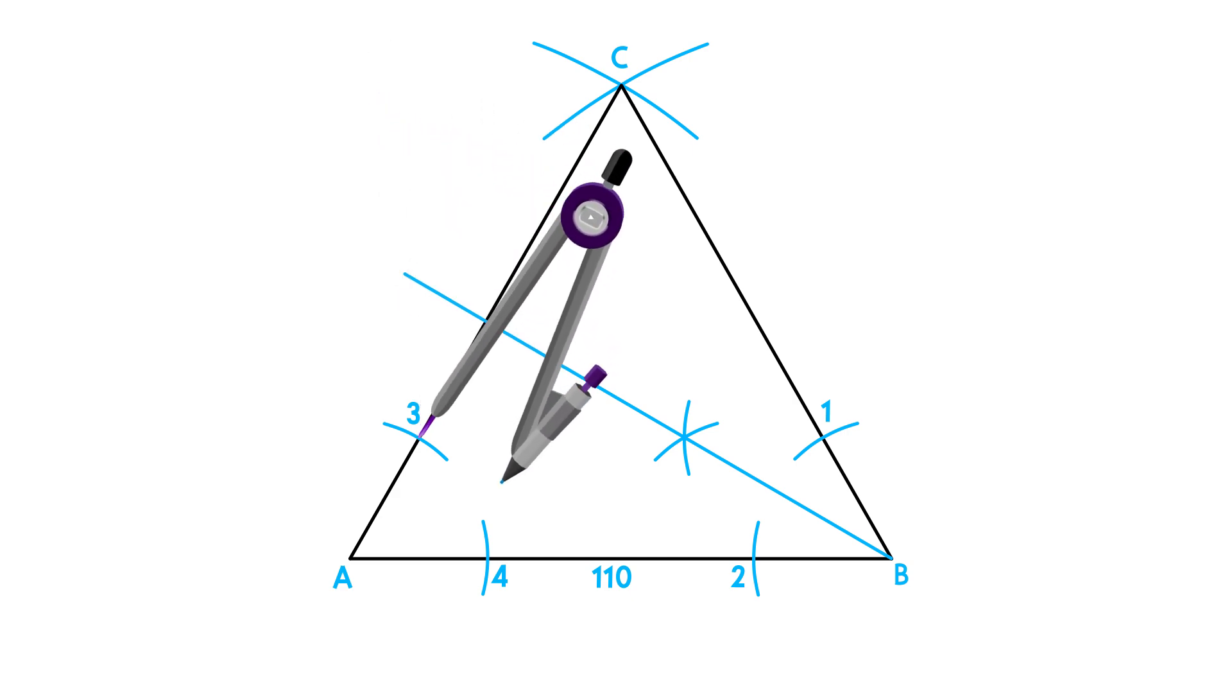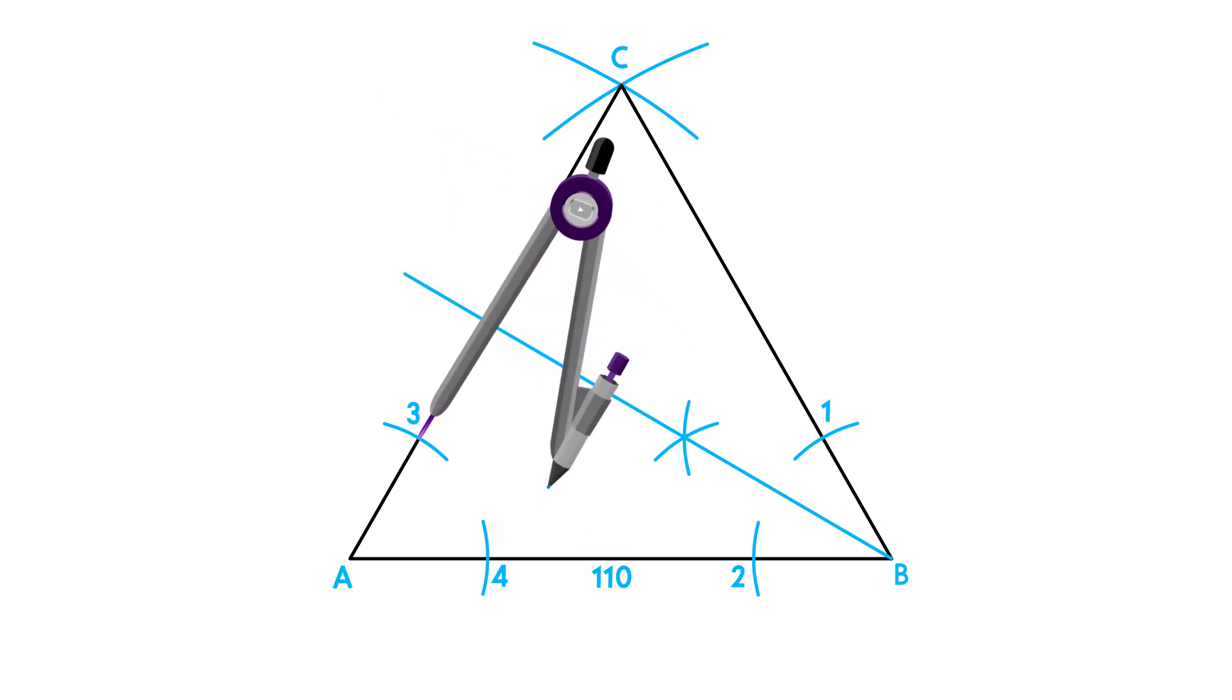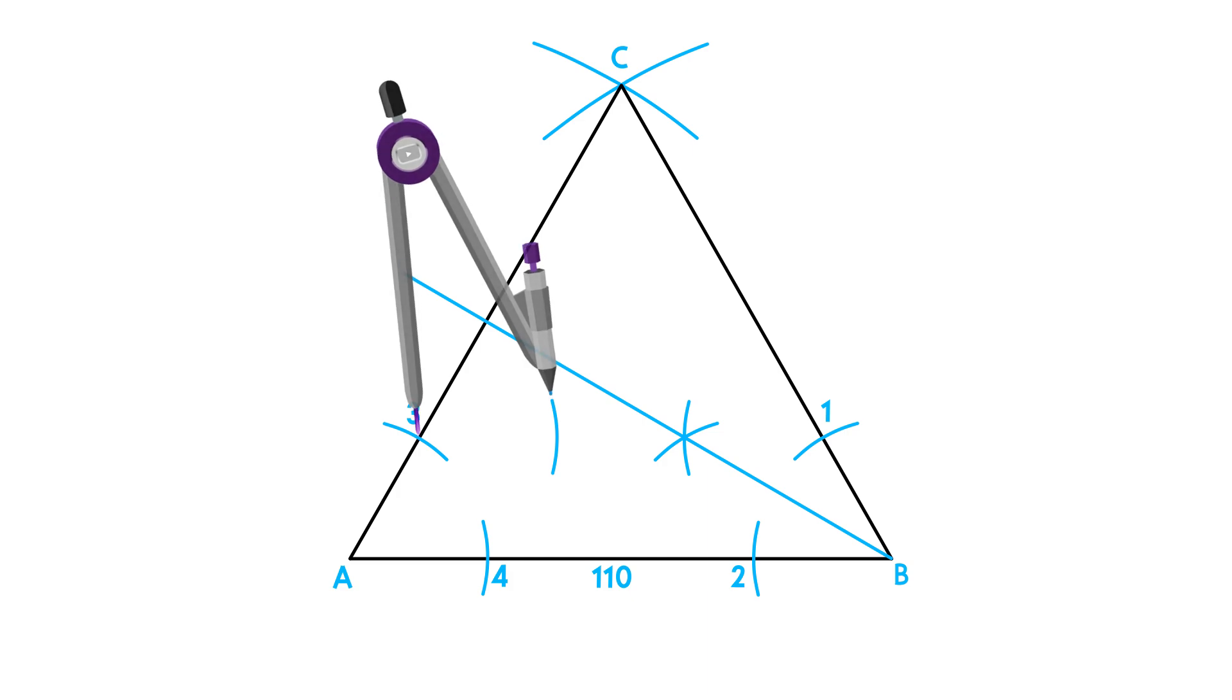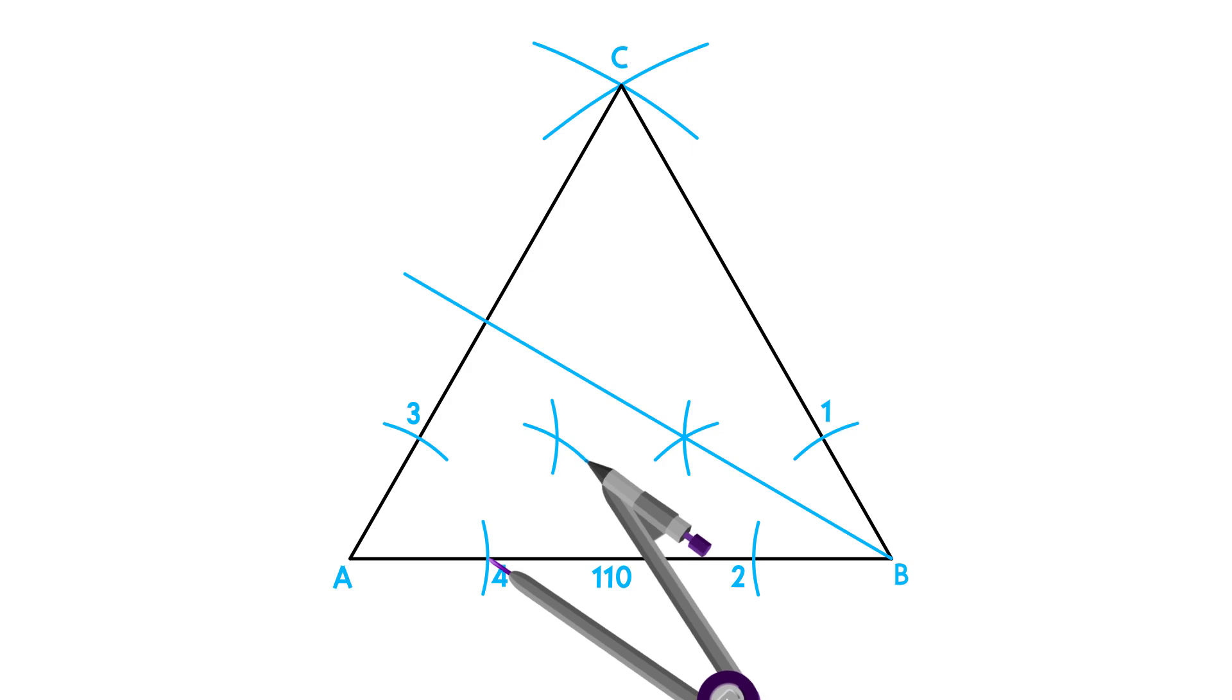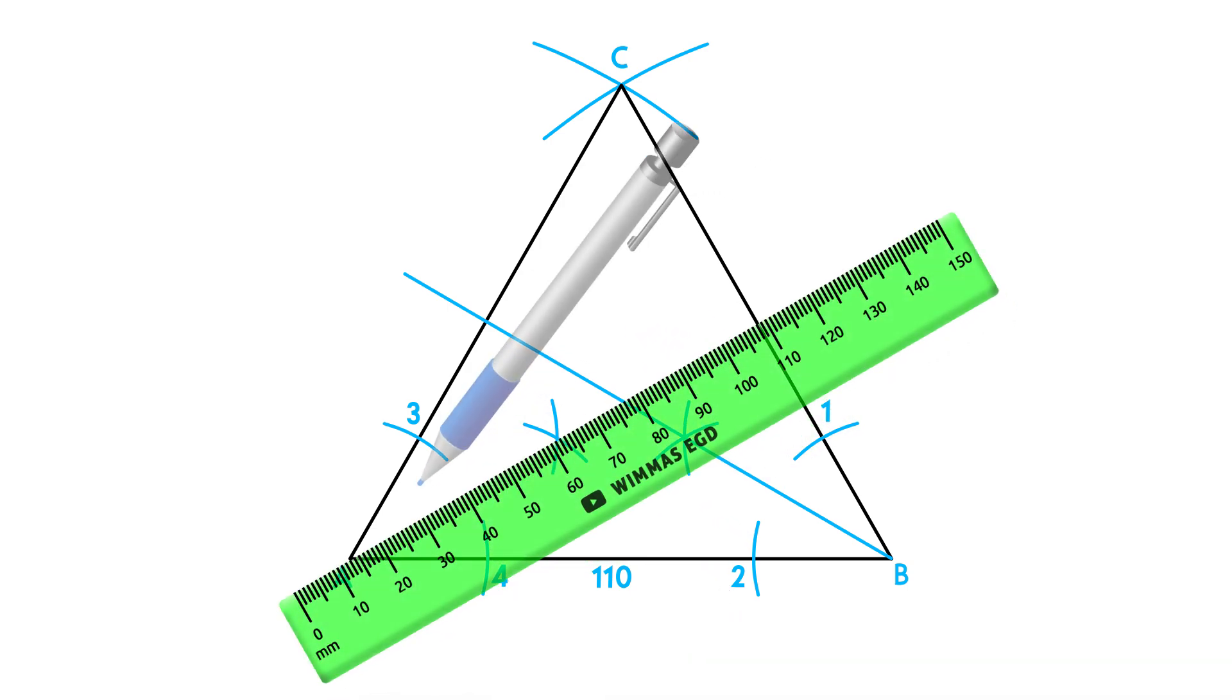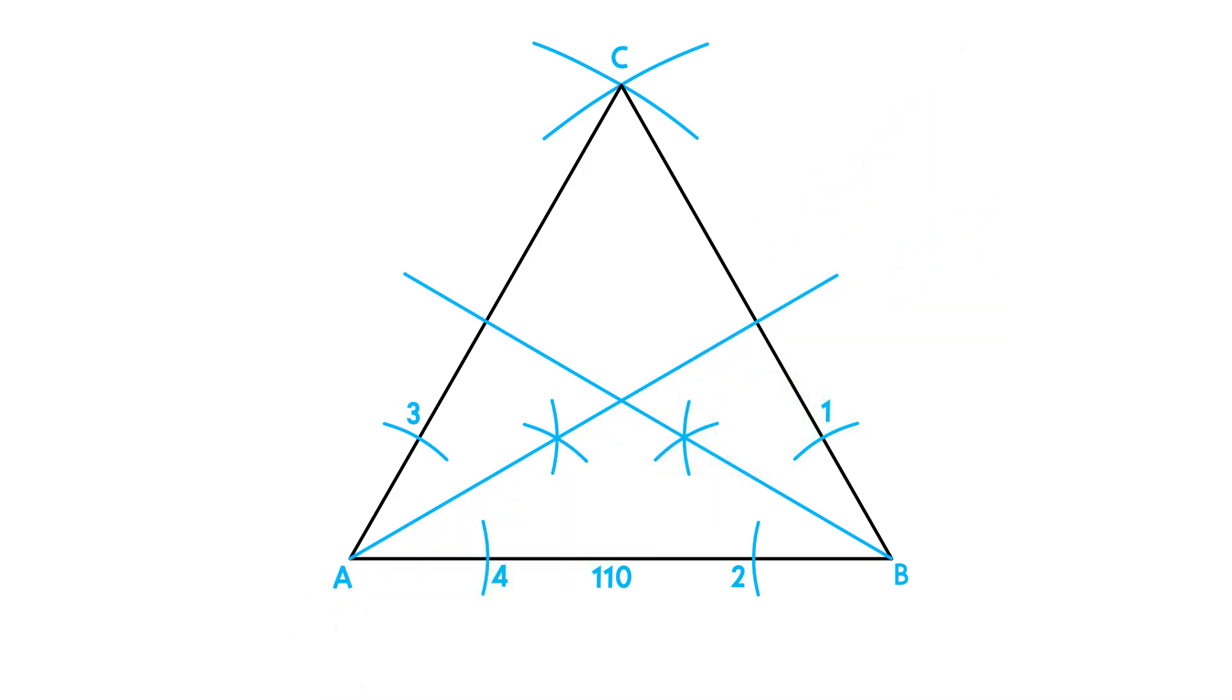Place your compass on point 3, adjust it to point 4 and draw an arc towards the center of the triangle. Using the same measurement, repeat this step on point 4 to intersect the previous arc. Draw a line from A through the intersection. This is your second angle bisector.